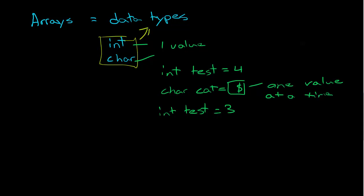An array is a data type where it has multiple values. So arrays have multiple values.